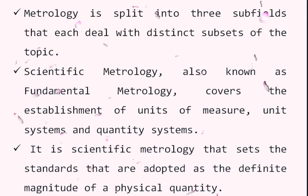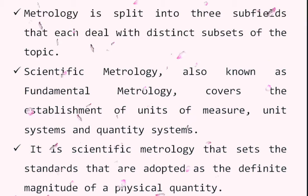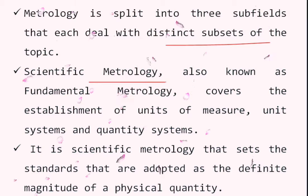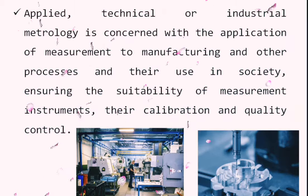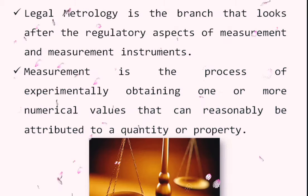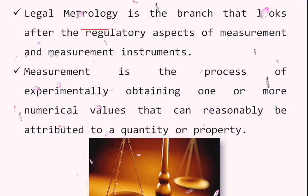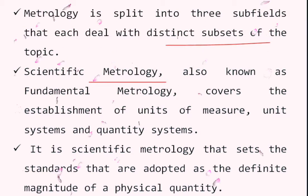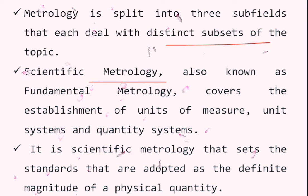Metrology is split into three subfields, each dealing with distinct subsets: scientific metrology, industrial metrology, and legal metrology. Scientific metrology is also known as fundamental metrology, and it covers the establishment of units of measure.